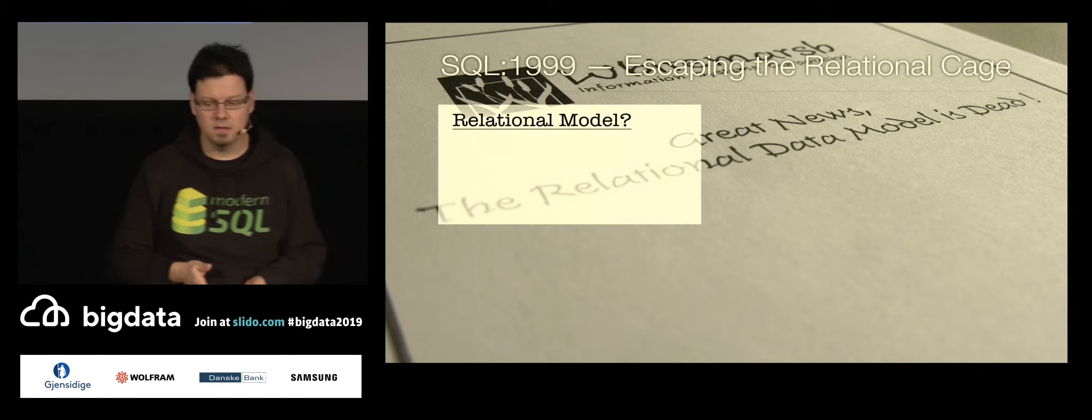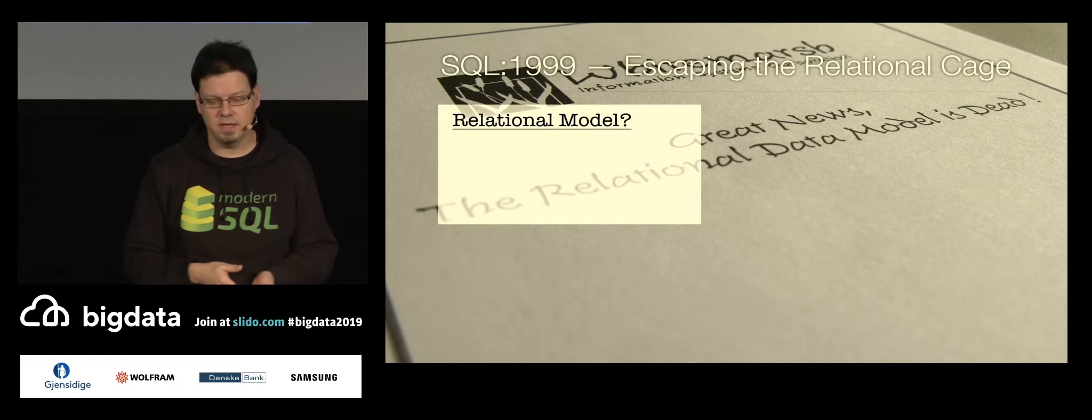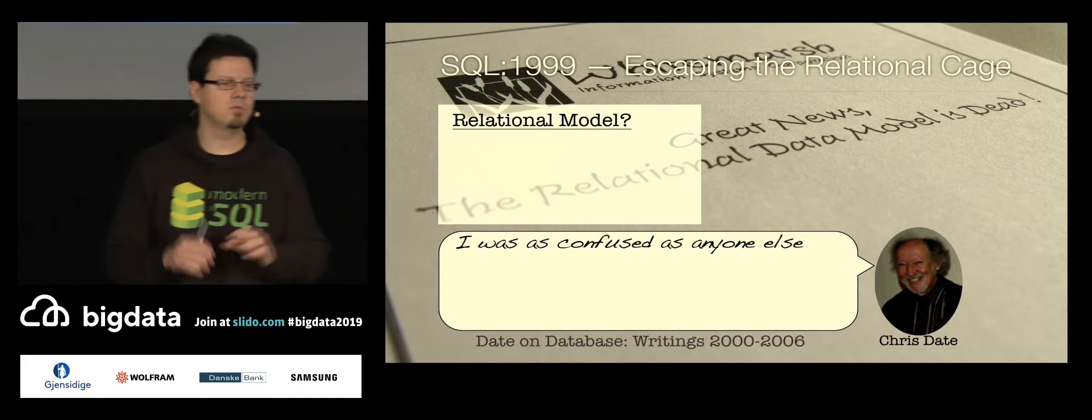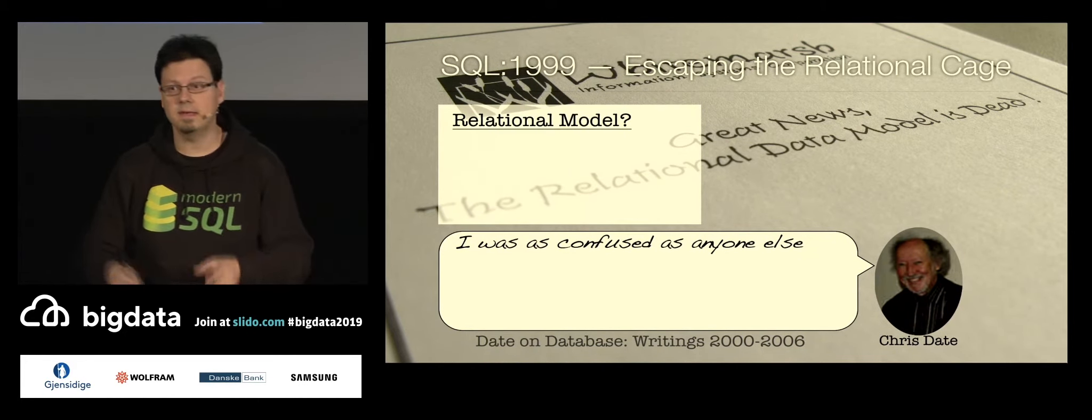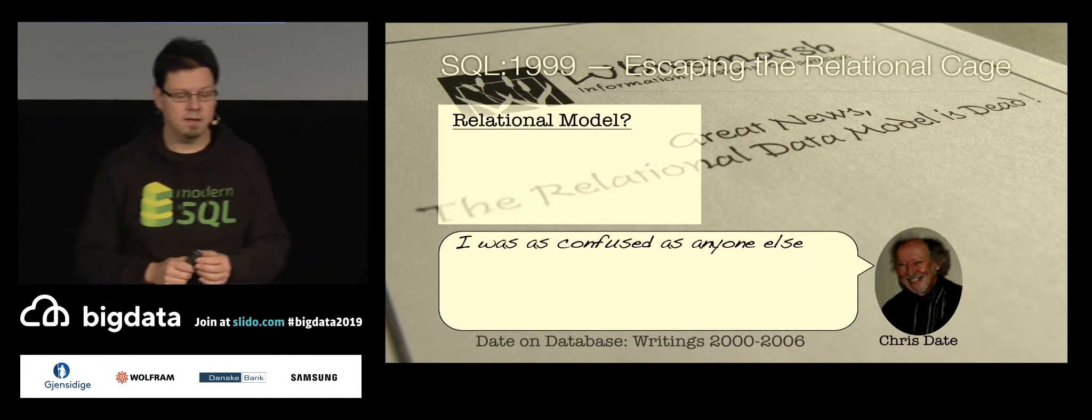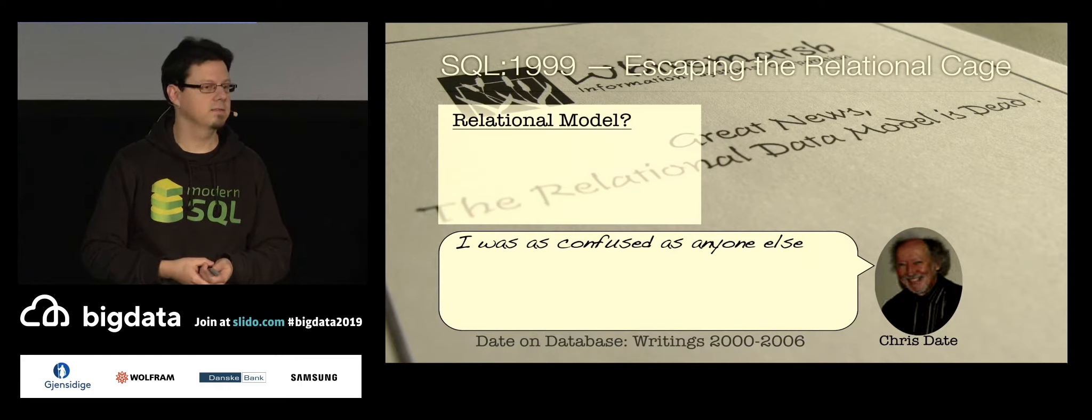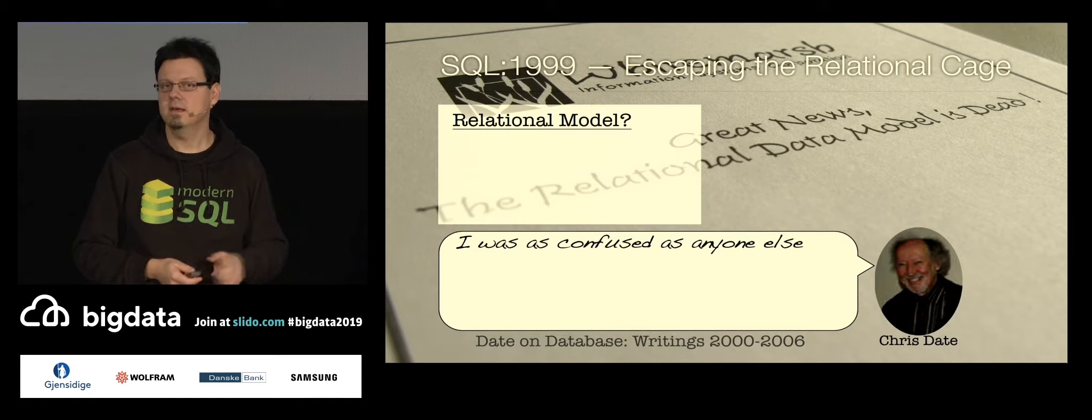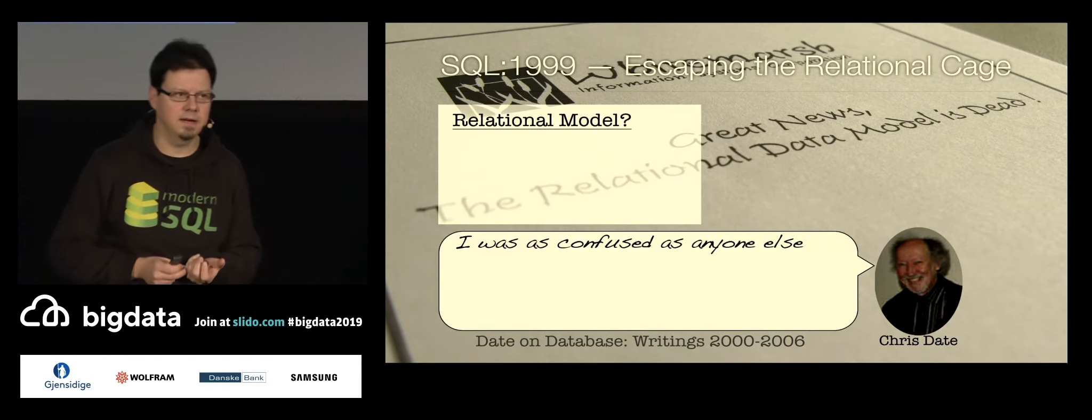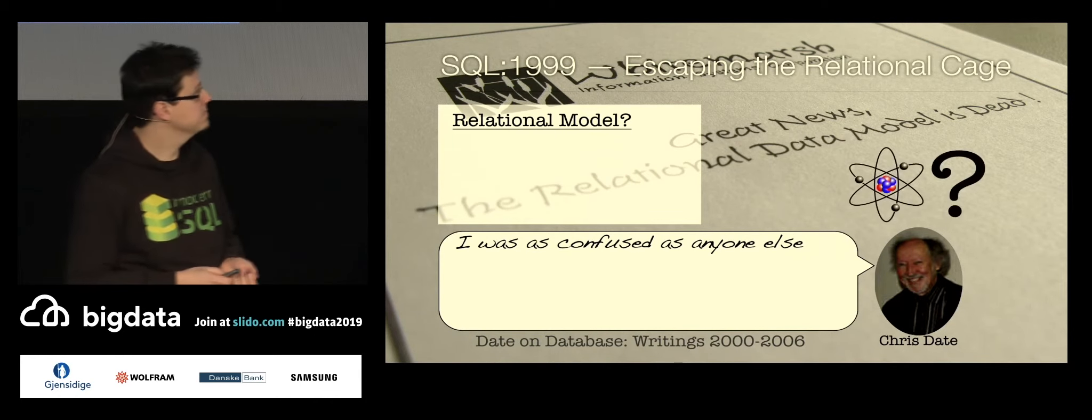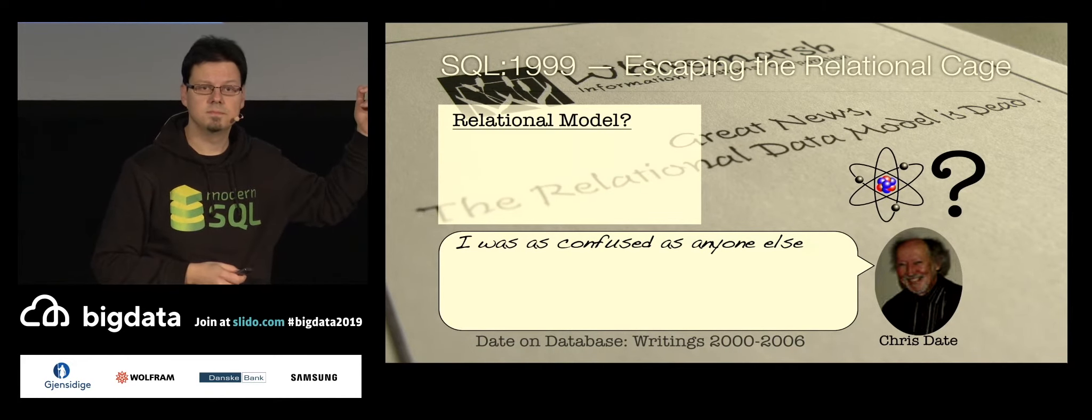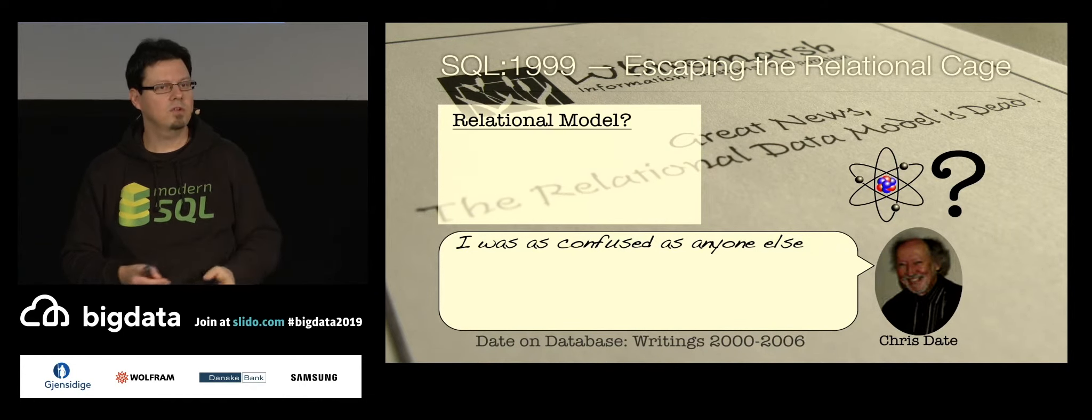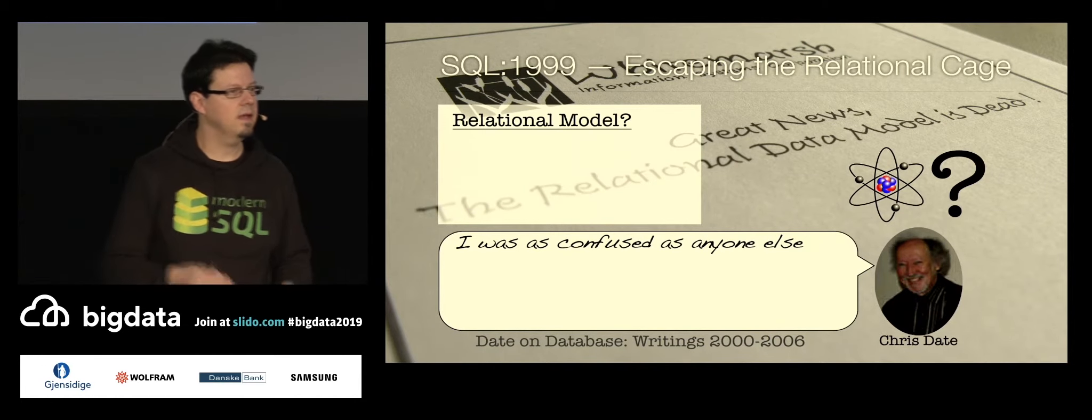So let's go into the details. What does it mean? On the model side, what has changed there? And that's a quite funny story here. So I like to quote Chris Date, because Chris Date wrote many, many books on topics like that, so it's easy to find quotes. And he wrote, I was as confused as anyone else. And if somebody like Chris Date, a really big name in that scene, is confused, then that's a pretty alarming sign. So what was he confused about? It's about these atoms. There was a huge discussion at that time. So the relational data model said, what you can put into a single cell has to be an atomic value.